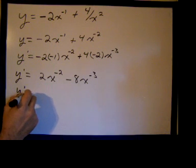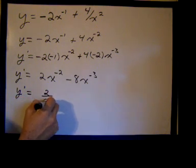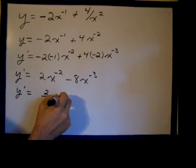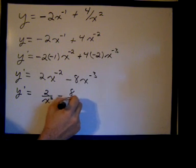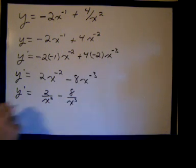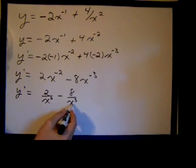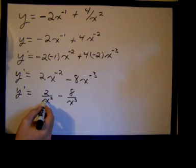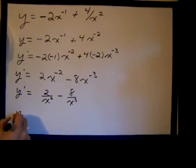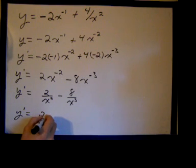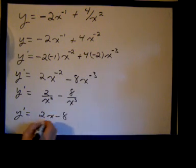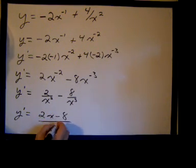You could rewrite this as y prime equals 2 over x squared minus 8 over x cubed. The common denominator is x cubed, we just need an x over here, so we could rewrite this as y prime equals 2x minus 8 over x cubed.